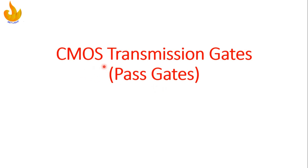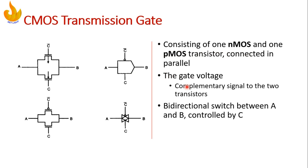In this video lecture you will learn about CMOS transmission gates, also called pass gates. The transmission gate consists of one NMOS and one PMOS transistor connected in parallel. In all diagrams, we can see that NMOS and PMOS are connected in parallel.